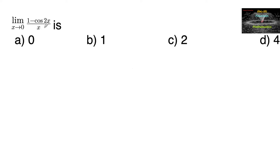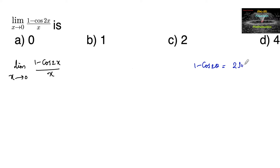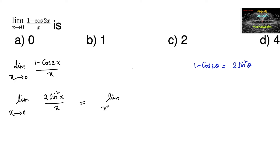Limit x tends to 0: (1 - cos2x) / x. Since we know that 1 - cos2θ = 2sin²θ, we can write this as limit x tends to 0: 2sin²x / x.